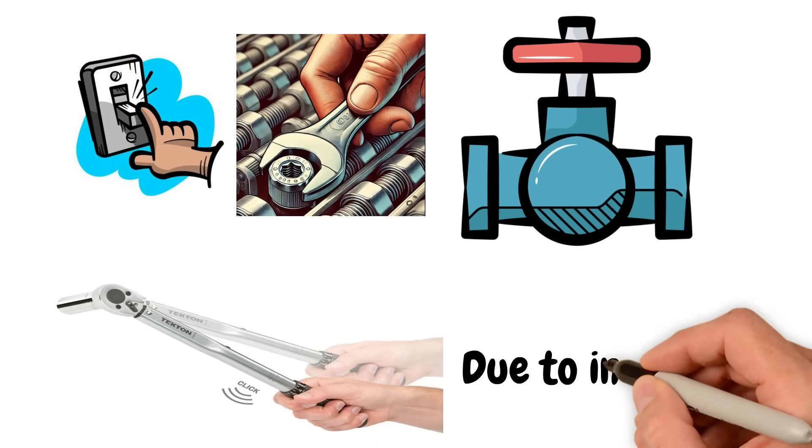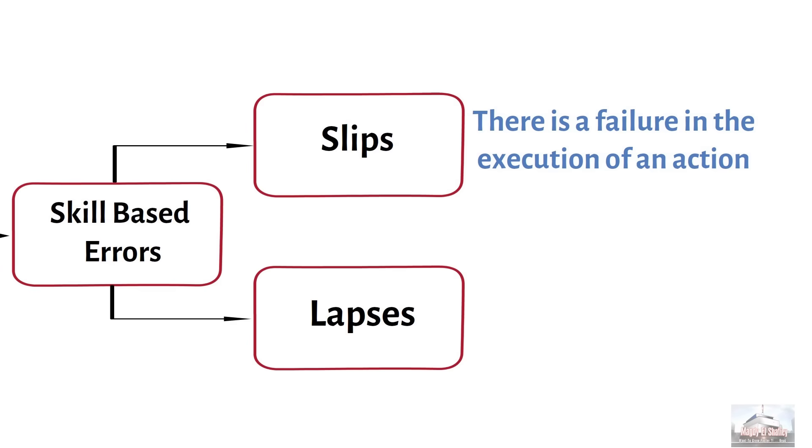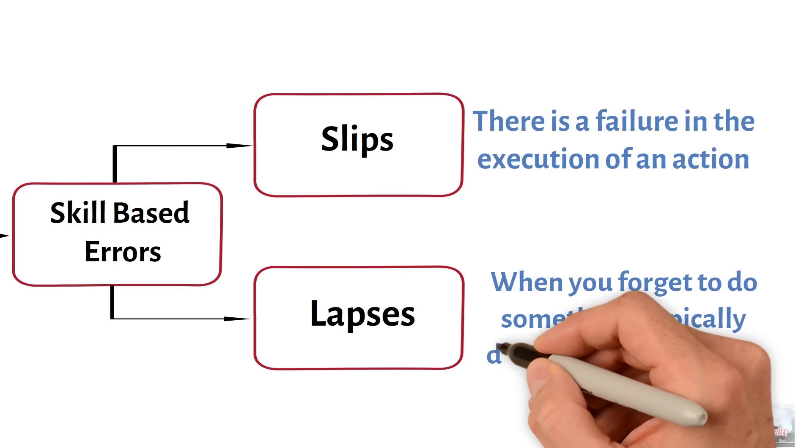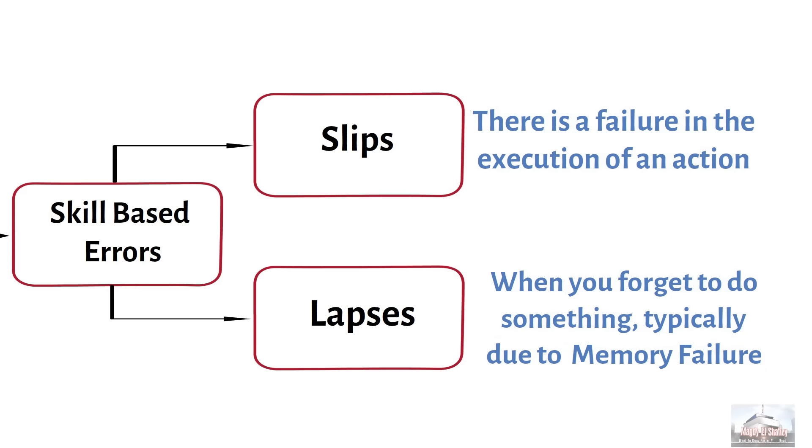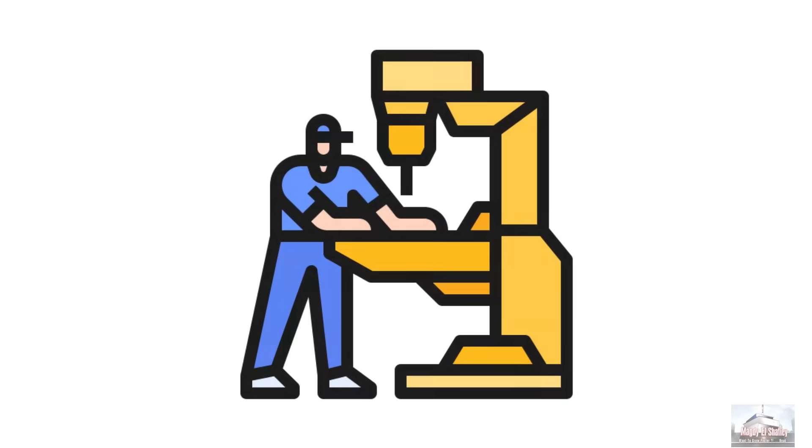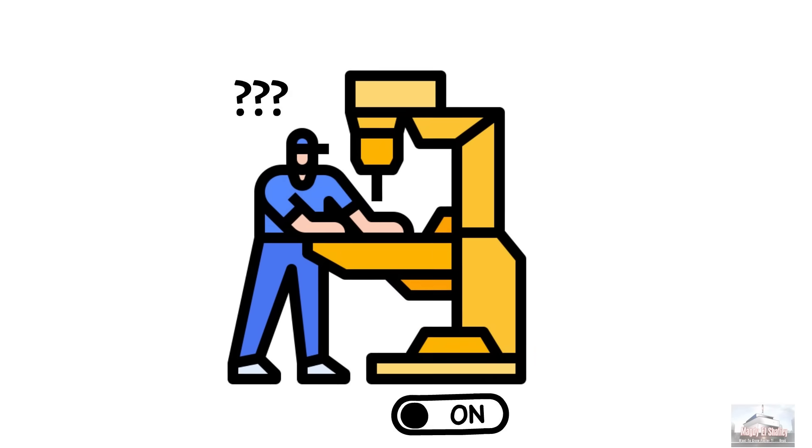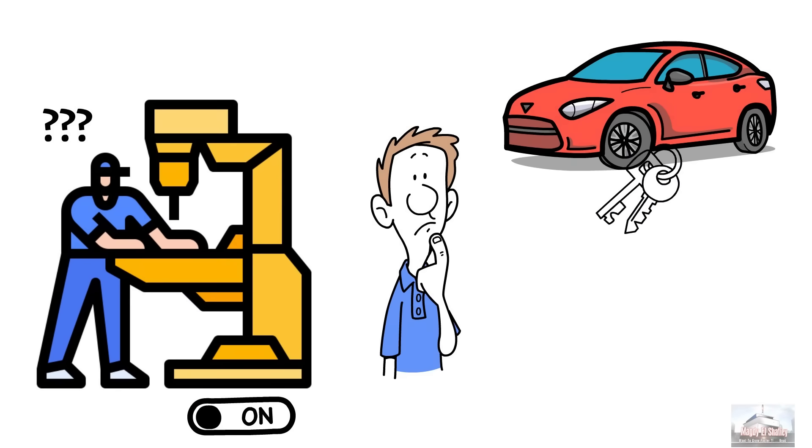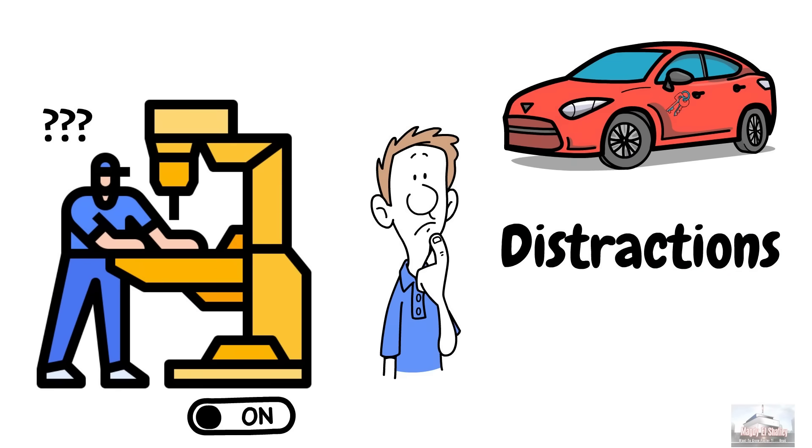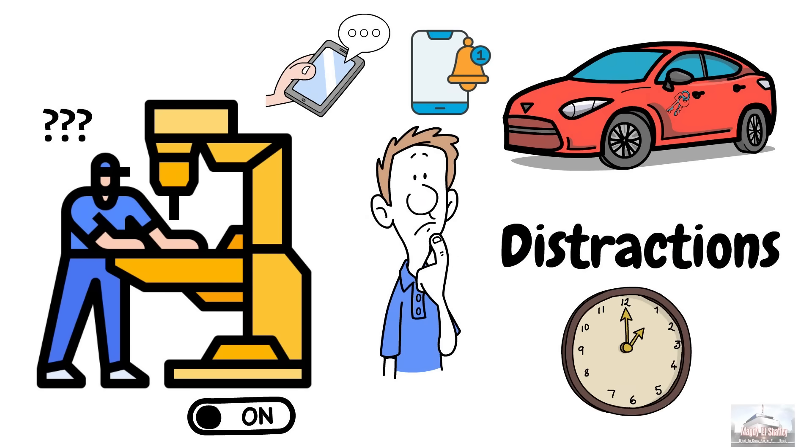While lapses, lapses happen when you forget to do something, typically due to memory failure, like forgetting to turn off a machine after completing a task or forgetting your car keys inside the car. This often occurs when distractions interrupt the task or you lose track of what you were doing, especially for tasks that take some time to complete or involve periods of waiting.